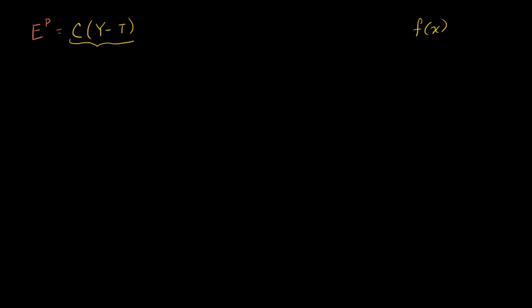So it's going to be your consumption function plus your planned investment, which we're going to assume is constant, plus government expenditures, plus net exports. A couple of videos ago we had built some simple models for a consumption function, so let's put one of those in.